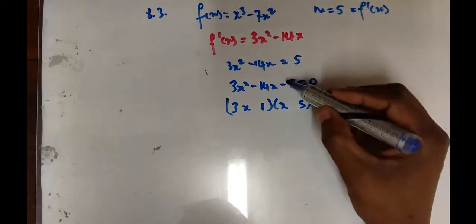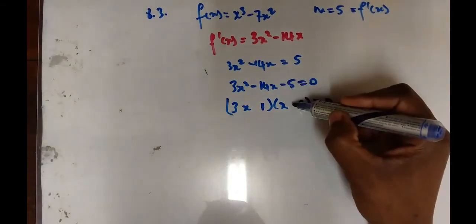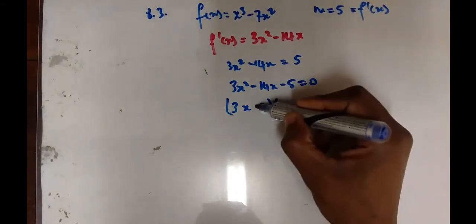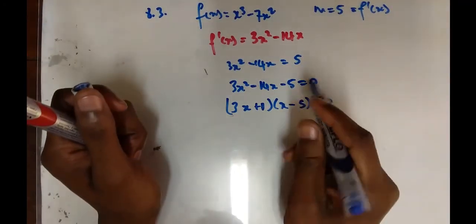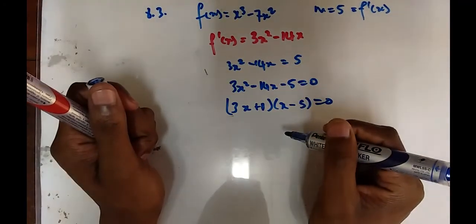Since this is negative, the bigger number takes the sign of the middle term, and the other number takes the opposite sign.